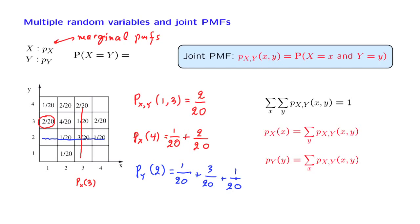Finally, notice that we are now able to answer the question that motivated us in the first place. To find the probability that the two random variables take equal values, we look at all outcomes for which X and Y take the same numerical value, identify that event in the diagram, and the probability is 2 over 20. In general, once we have the joint PMF of two random variables, we can answer any questions regarding probabilities of events involving those two random variables.